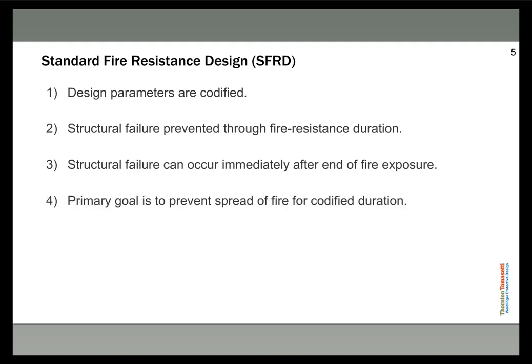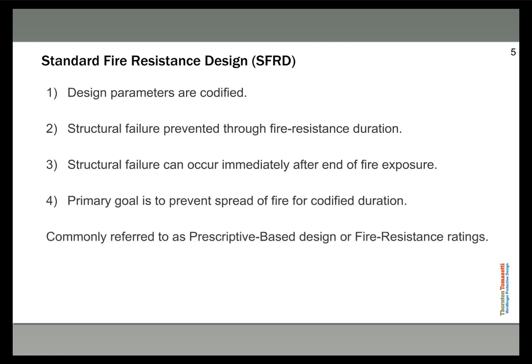The primary goal of standard fire resistance design is to prevent the spread of fire for that codified duration. The idea is that if a fire starts in a room, our assemblies — walls, doors — help prevent the spread to the next room and make it easier for first responders to put out the fire. Standard fire resistance design is commonly referred to as prescriptive-based design, defined by fire resistance ratings on building elements.